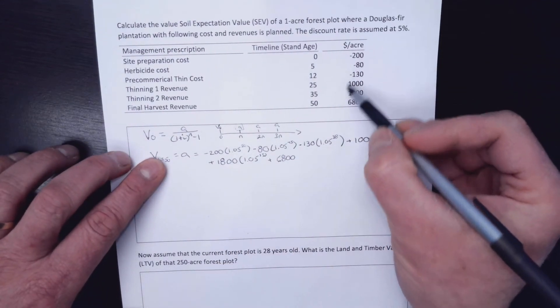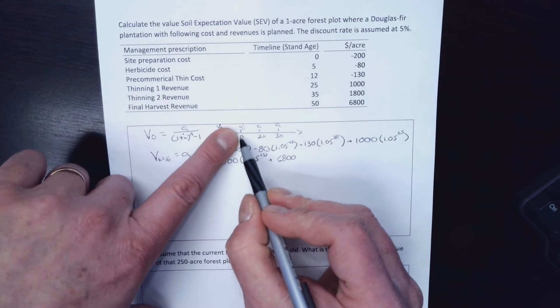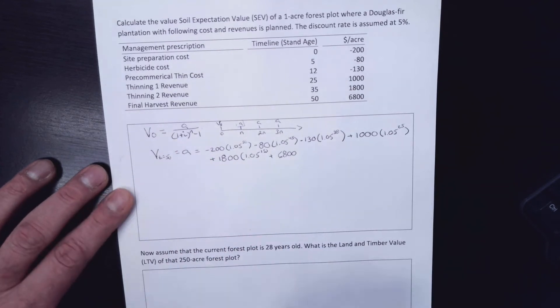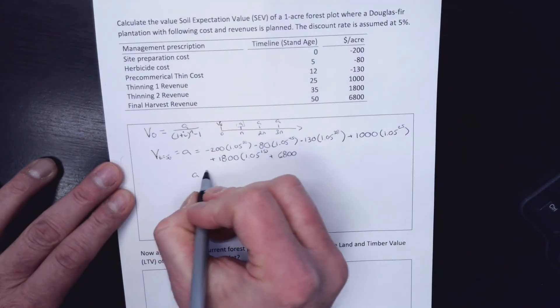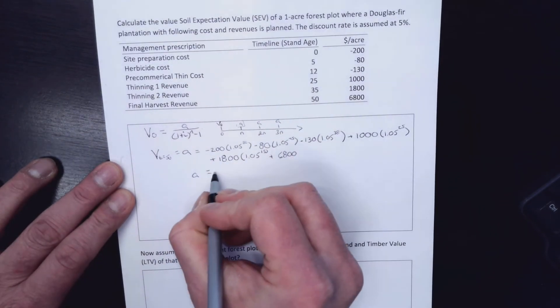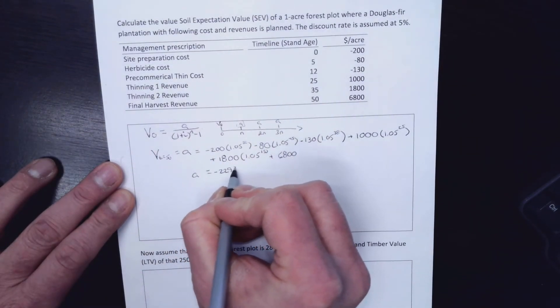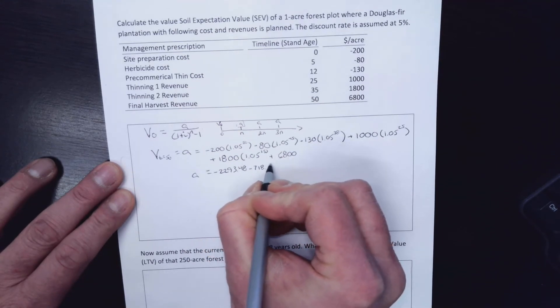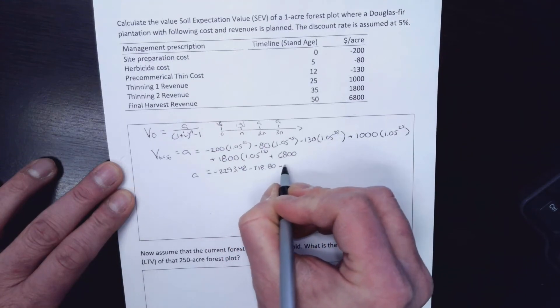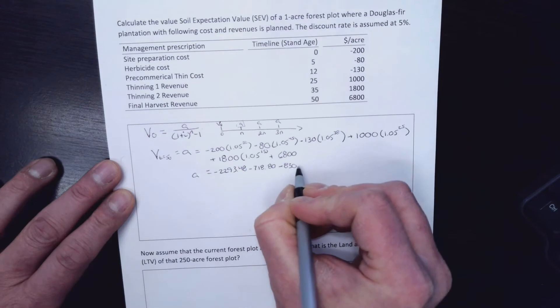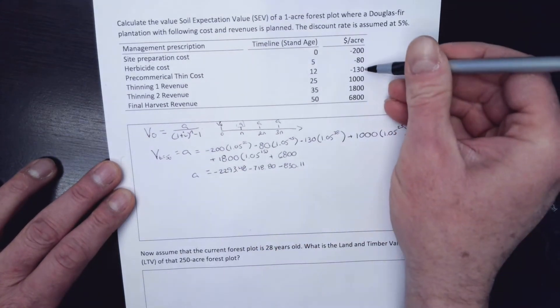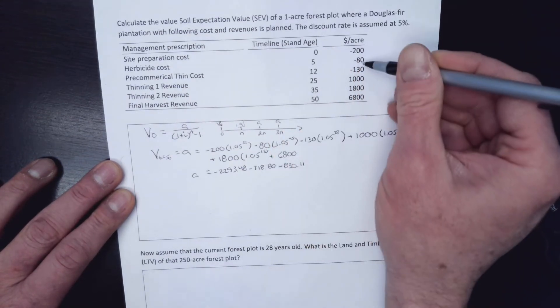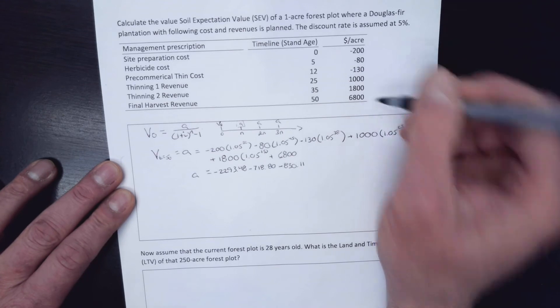So here I've basically taken all of these values and moved them out to the end of that rotation so that I can apply this perpetual periodic once as I'm doing it. So my A equals, in this case, this first one is minus $2293.48 minus the second one of $718.80 minus $830.11. So $830.11 is me taking this $130, 38 years forward in time, just like $718 is me taking this $80, 45 years forward in time.